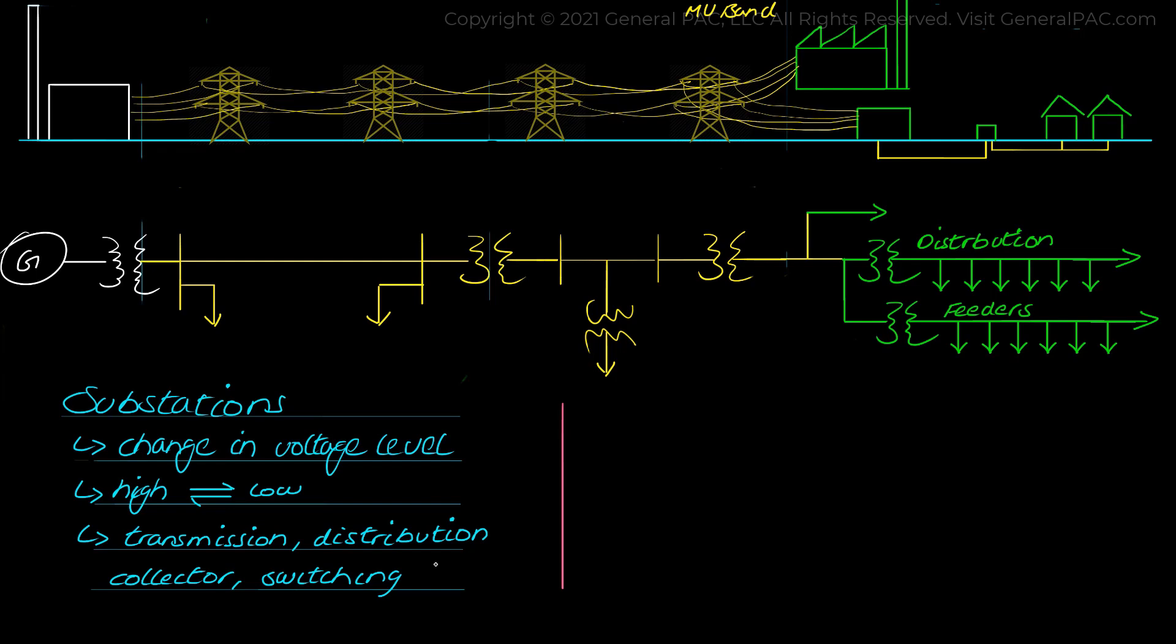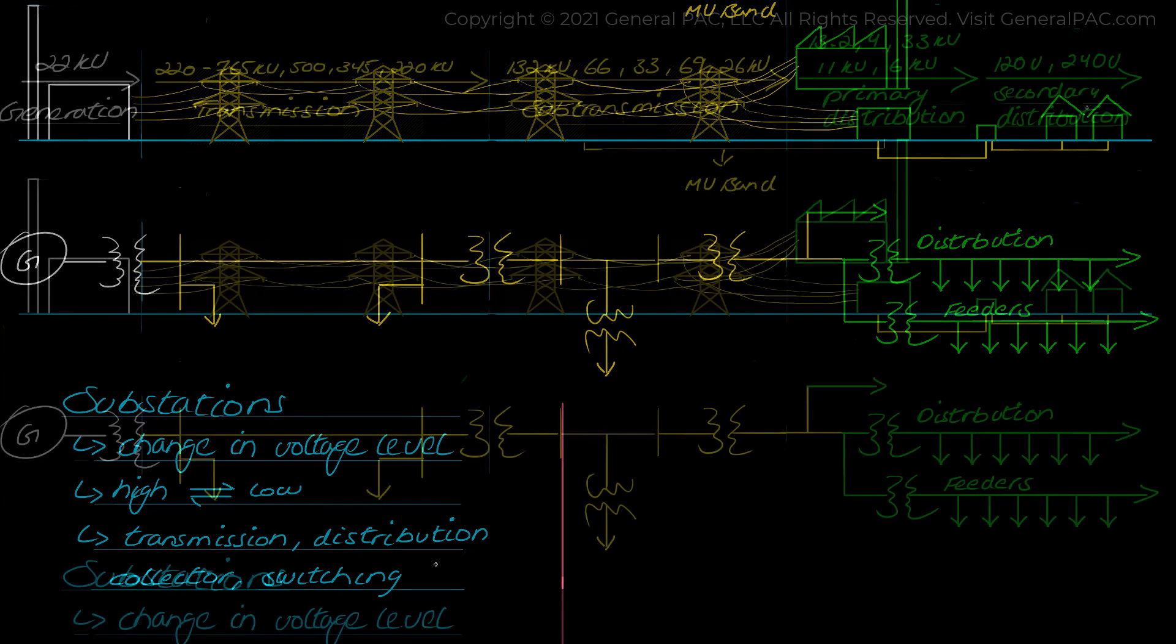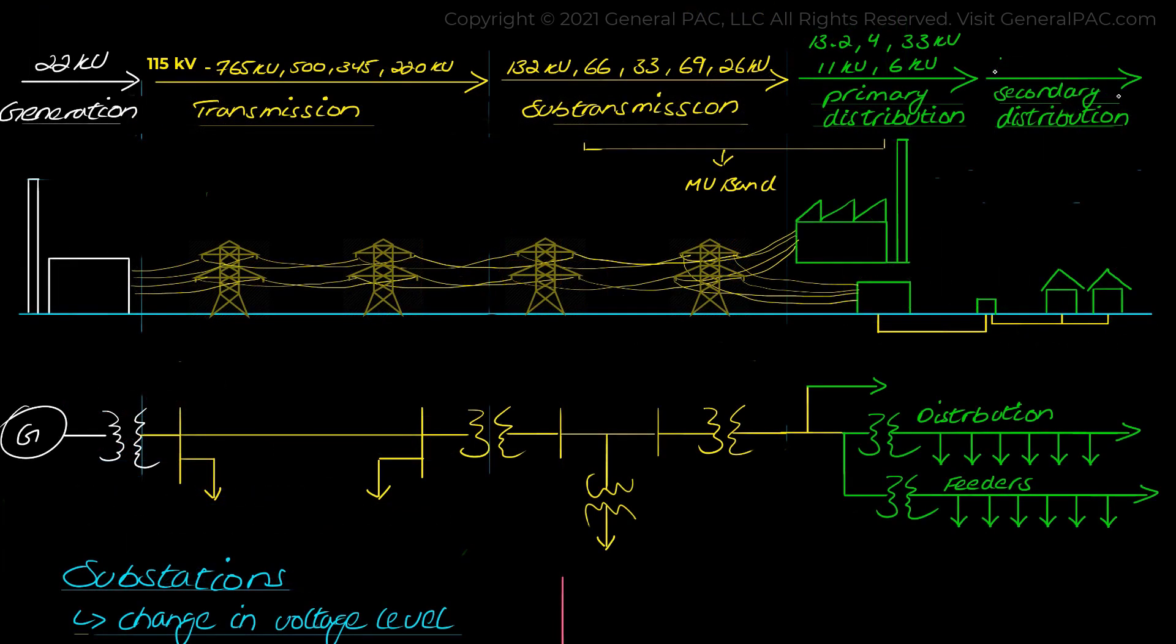The electricity that comes to our home is then stepped down from the primary distribution to secondary distribution with common voltages at 120V or 240V single phase or 400V three phase.